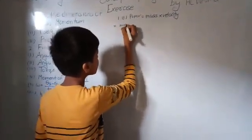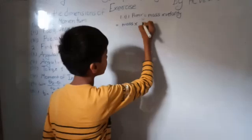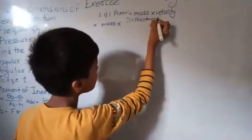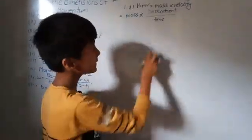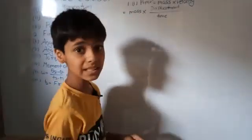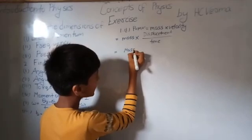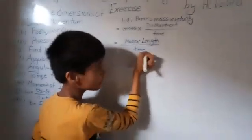Here we notice that mass is already a base quantity, but velocity is not. So we rewrite velocity using its formula: velocity equals displacement divided by time. Therefore, linear momentum equals mass into displacement divided by time. Now mass is a base quantity, time is a base quantity, and displacement can be taken as length, which is also a base quantity.